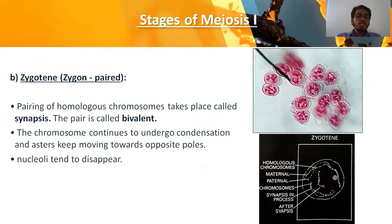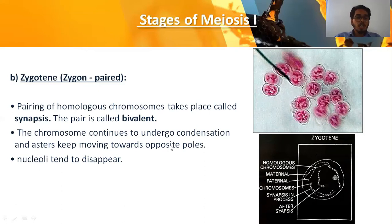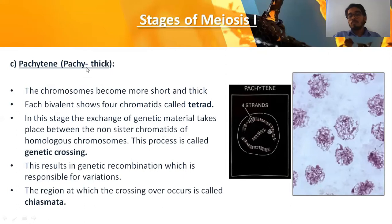In zygotene, the chromatin network continues condensing and becomes more thickly visible compared to leptotene. The pairing of homologous chromosomes takes place — this pairing is called synapsis. The pair is called a bivalent, meaning two similar chromosomes present side by side. This process of pairing is synapsis. The chromosomes continue to undergo condensation, asters keep moving toward opposite poles, and the nucleolus tends to disappear. This microscopic view was taken under 40x magnification, giving 400x total magnification.